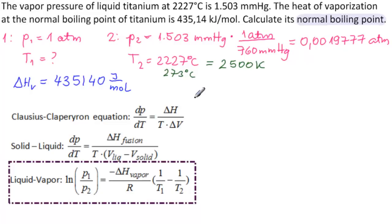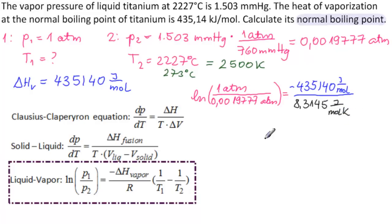So we have Ln of 1 atmosphere over 0.0019777 atmospheres. They cancel. And then we have that's equal to minus 435140 joules per mole divided by the gas constant R, which is 8.3145 joules per mole Kelvin. And then we have our temperatures, which is 1 over T1. T1 is what we're looking for, minus 1 over T2. T2 is 2,500 Kelvin.